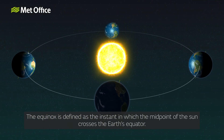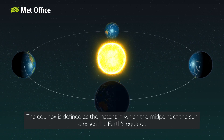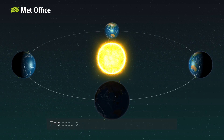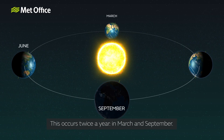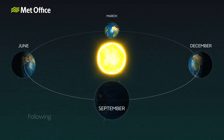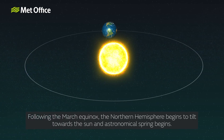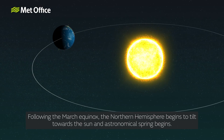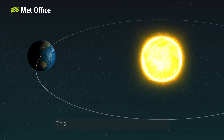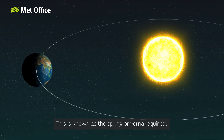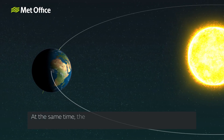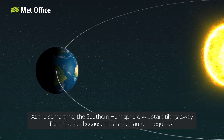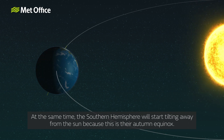The equinox is defined as the instant in which the midpoint of the Sun crosses the Earth's equator. This occurs twice a year, in March and September. Following the March equinox, the northern hemisphere begins to tilt towards the Sun, and astronomical spring begins. This is known as the spring or vernal equinox. At the same time, the southern hemisphere will start tilting away from the Sun, because this is their autumn equinox.